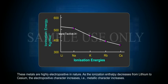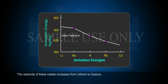As the ionization enthalpy decreases from lithium to cesium, the electropositive character increases. That is, metallic character increases. The reactivity of these metals increases from lithium to cesium.